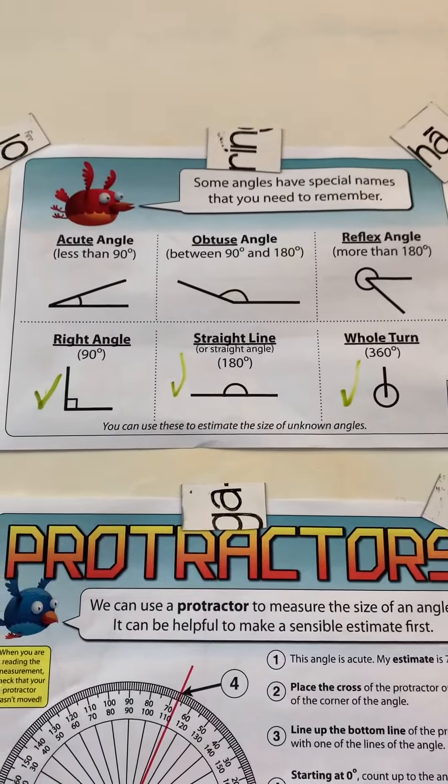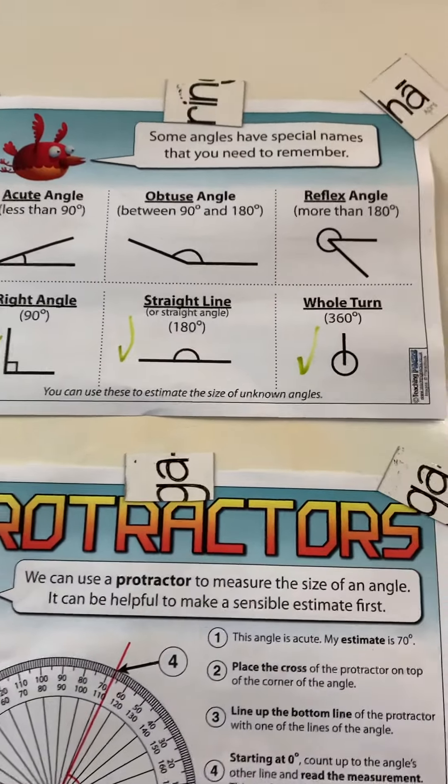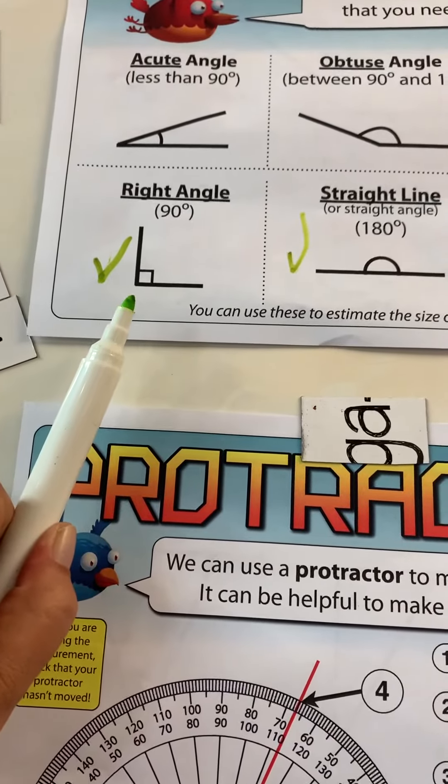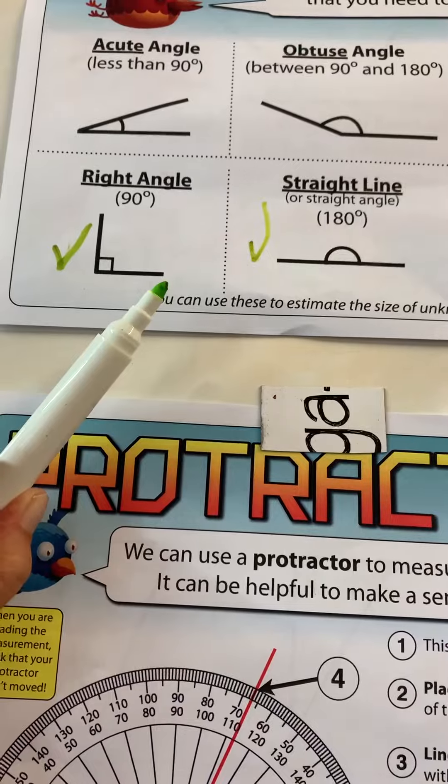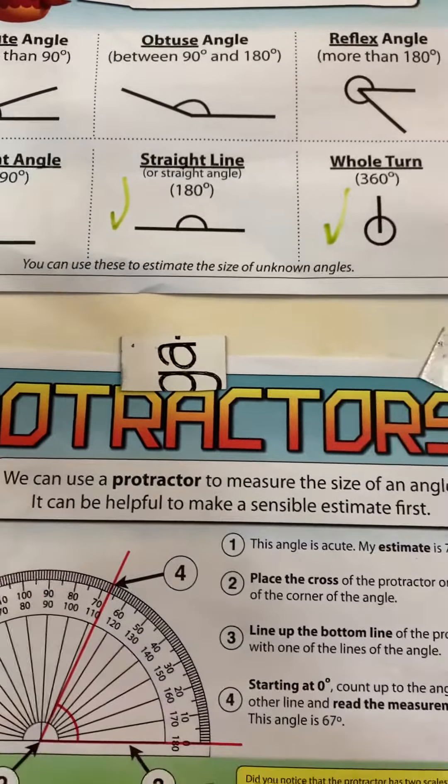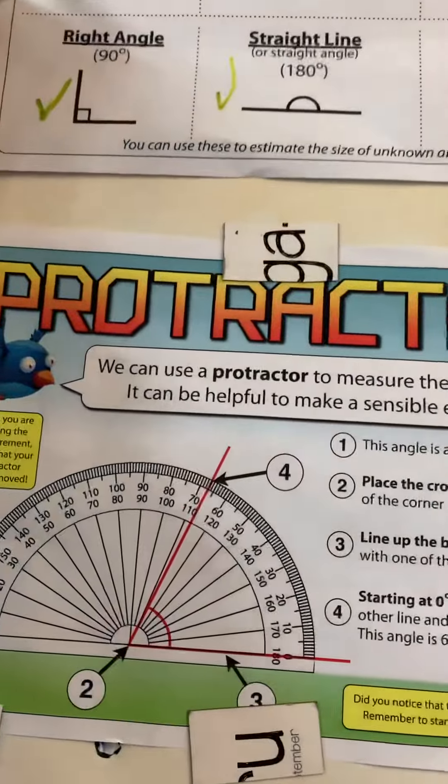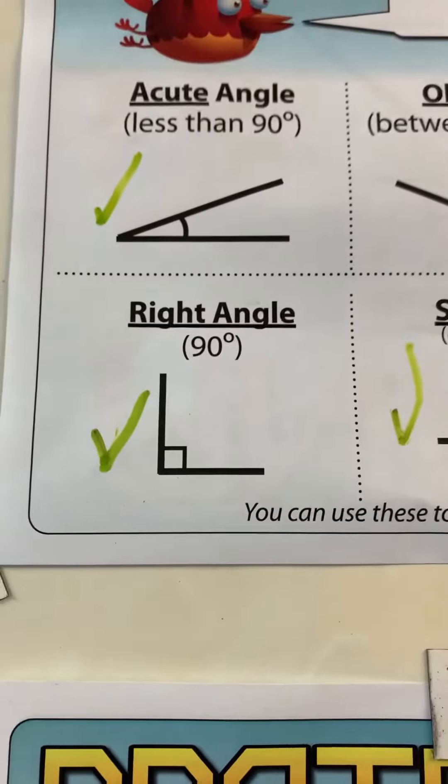We've got three more angles that we need to learn, and it's quite simple. So if that is 90 degrees and it's smaller, the angle is smaller than that, that will be called an acute angle. So anything smaller than that right angle will be acute.